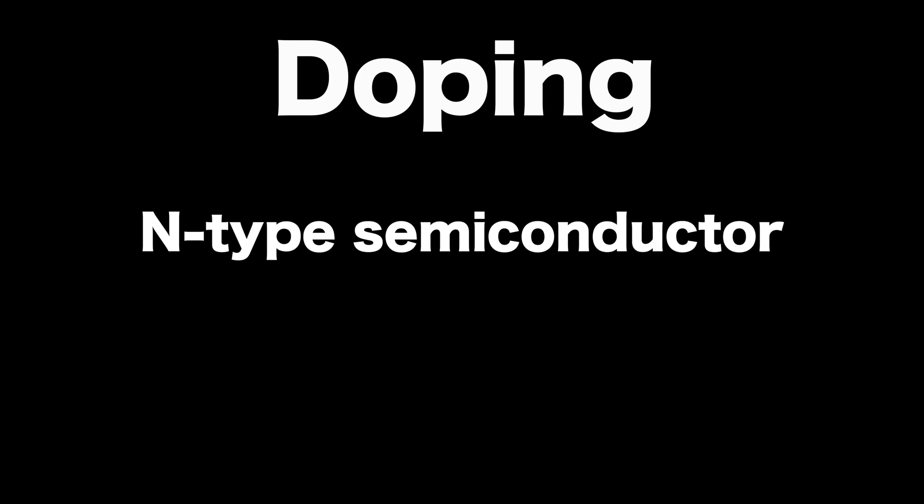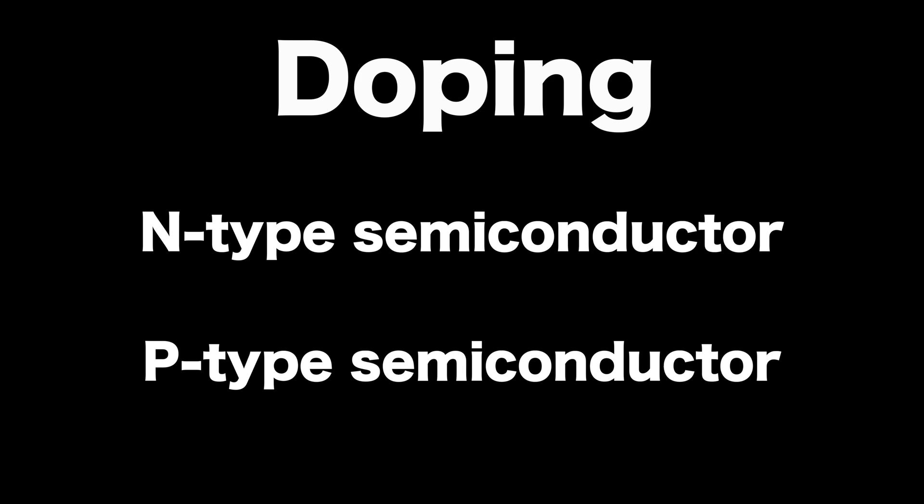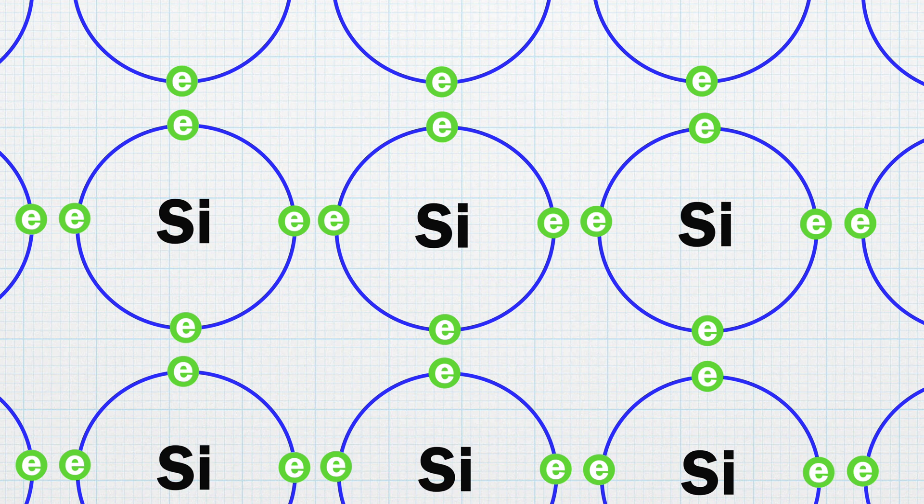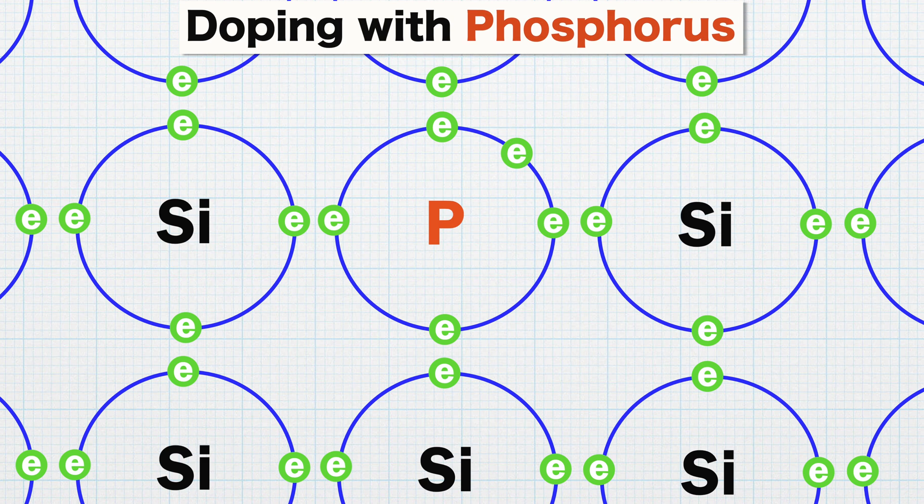Depending on the impurity that's introduced to silicon, it can be classified as N-type semiconductor or P-type semiconductor. If an impurity atom has five valence electrons, such as phosphorus, four valence electrons can bond with four adjacent silicon atoms and the fifth electron has nothing to bind to, so it's free to move around.